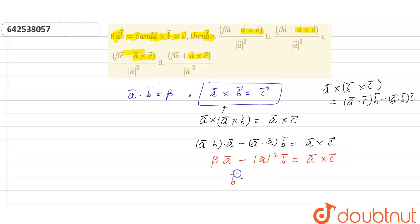Now, by this logic, B⃗ is going to be equal to (βA⃗ - A⃗×C⃗) divided by |A⃗|².